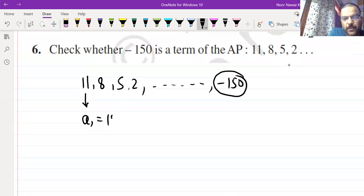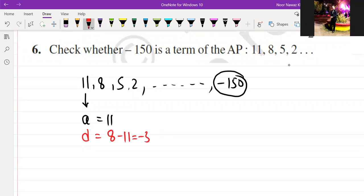A is 11. If A is 11, then d can also be removed. 8 minus 11, keep your attention, minus 3.